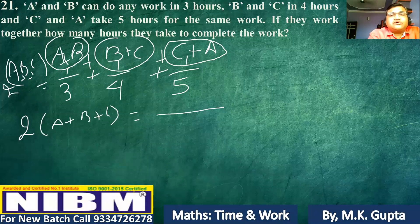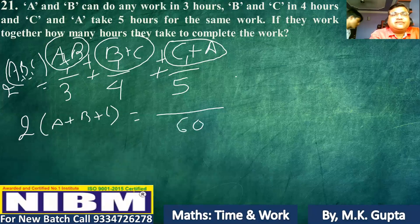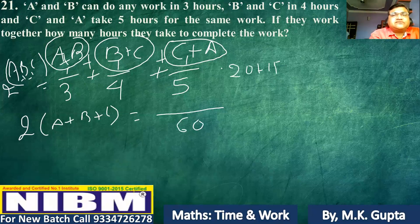The LCM of 3, 4, and 5 is 60. So we get 20 plus 15 plus 12, which equals 35 plus 12, giving us 47.